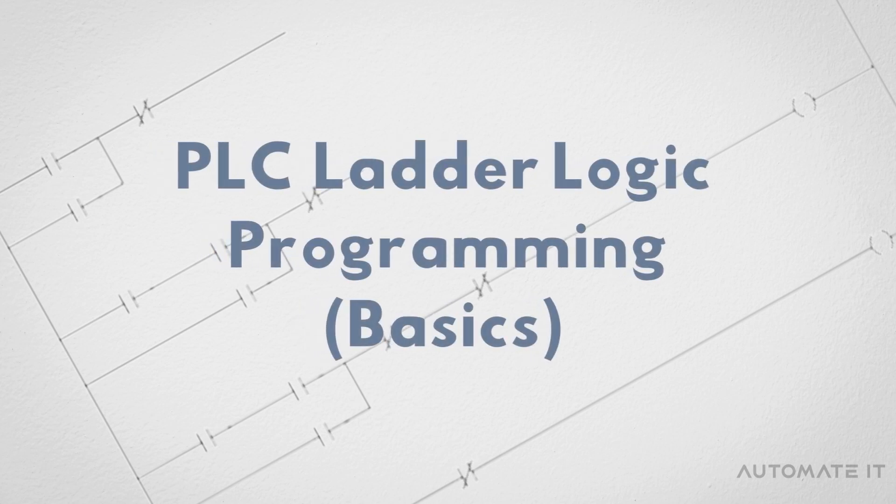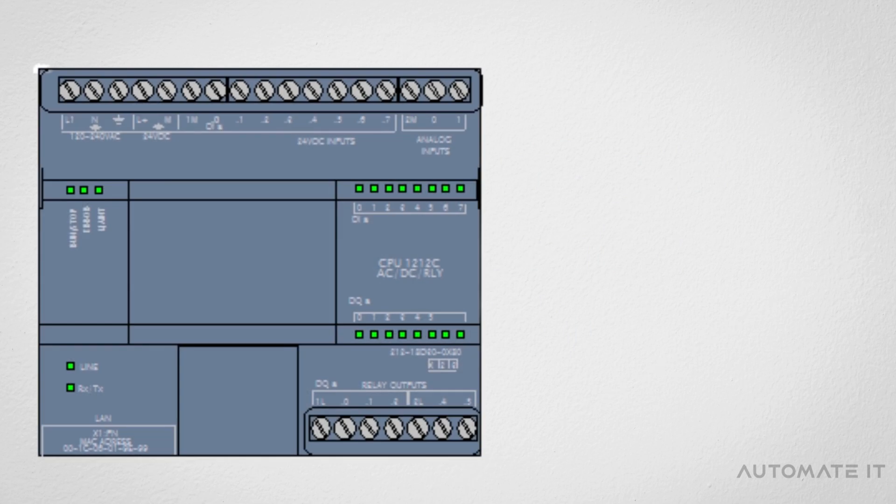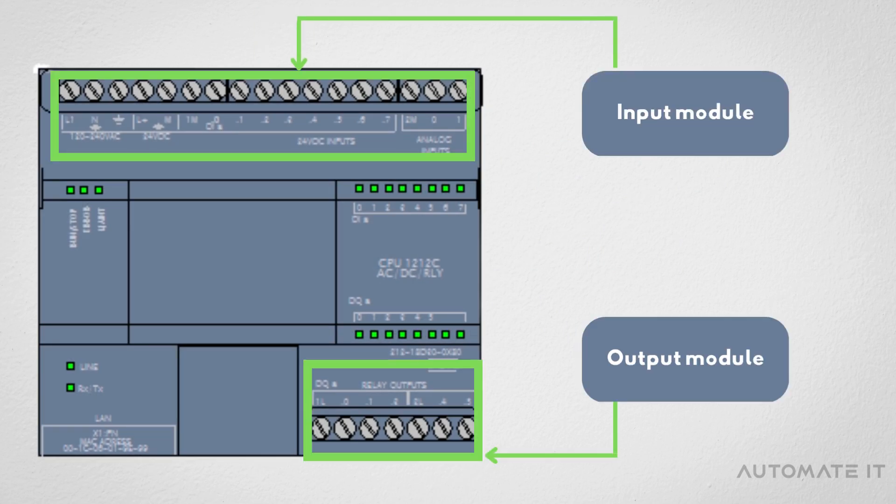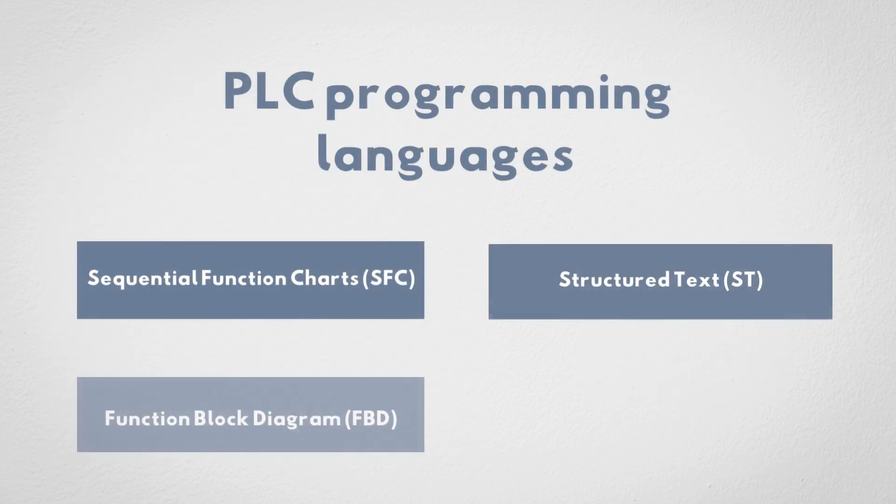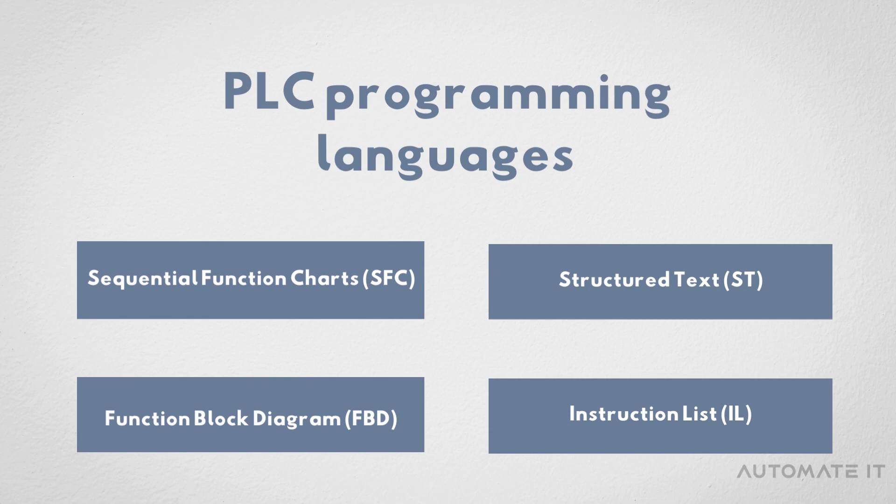PLC ladder logic programming. As we see in the last video, a PLC is composed of an input interface, output interface, and the CPU, which contains a program that tells the PLC how to execute control instructions. A PLC can be programmed using different program languages.